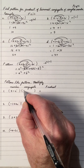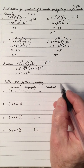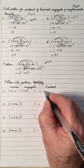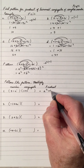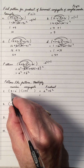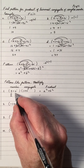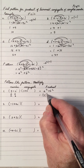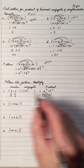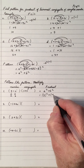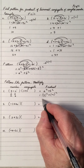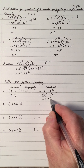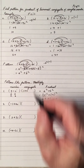Let's practice applying the pattern. The conjugate of 3 plus i is 3 minus i, and the product uses the pattern a squared plus b squared. Here a is 3 and b is negative 1, so 3 squared plus negative 1 squared is 9 plus 1, which is 10.